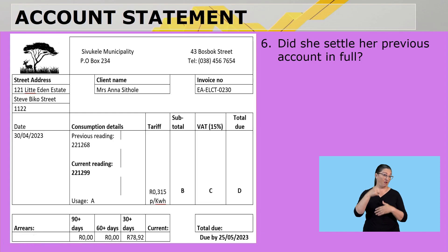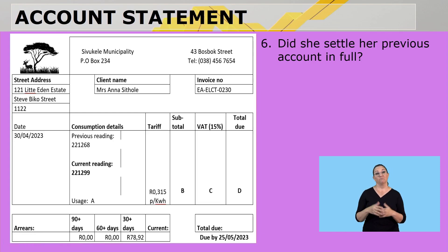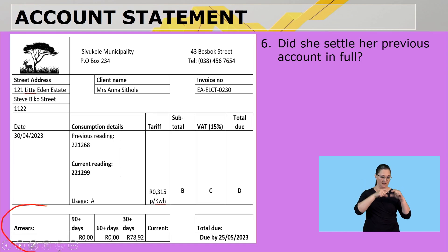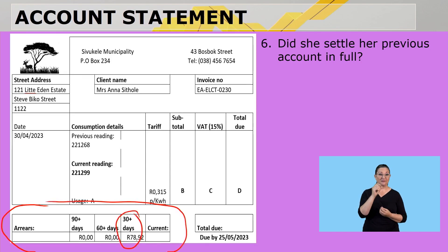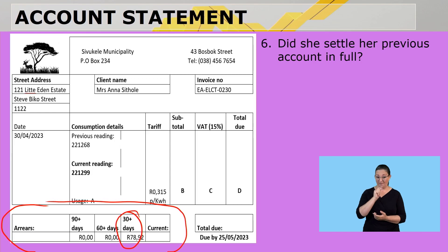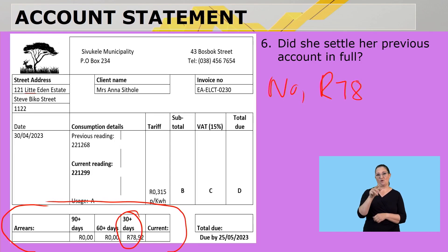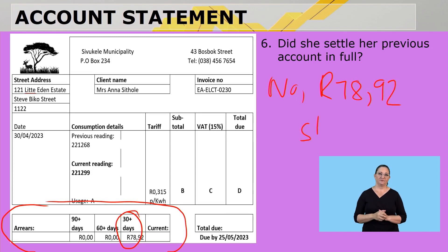Did she settle her previous account in full? Because they want to know about the previous account, we need to look at the payment history. In arrears by 30 days, there is an amount of R78,92. So did she settle it in full? No, she didn't — she short-paid and R78,92 is still to be paid.